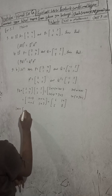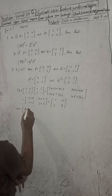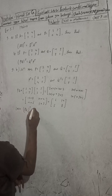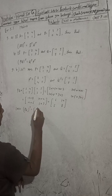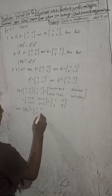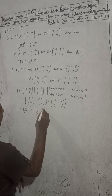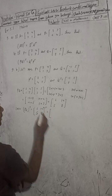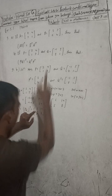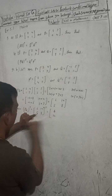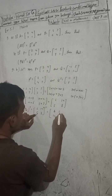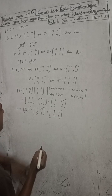Take LHS: LHS = (PQ) whole transpose. PQ is [6,14; 5,8]. Transpose means interchange rows and columns. First row [6,14] becomes first column and second row [5,8] becomes second column. So LHS = [6,5; 14,8].